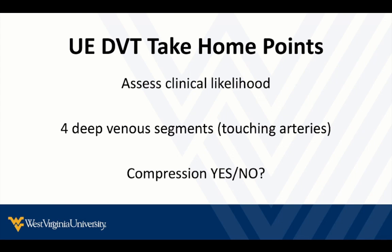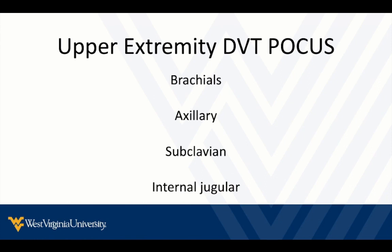The take-home points are the same. We're going to assess clinical likelihood. There are basically four venous segments that we're going to look for. The veins of interest are always going to be touching arteries — and do they compress? Yes or no. The four junctions I usually start with distally: brachials, then axillary vein, subclavian vein, and the internal jugular. It's not always intuitive that an upper extremity DVT exam should include the subclavians and the internal jugular, but those are part of the exam as well.